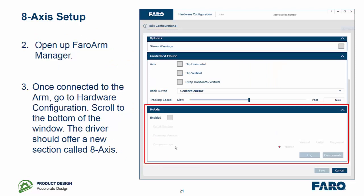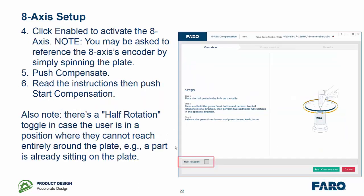You then open up the Faro Arm Manager. And once you've got both pieces of equipment connected, you scroll to the bottom and the driver should now have a new section called 8-axis. You click on the Enable button to activate the 8-axis and then now we need to tell where each axis of the arm is in relationship to the 8-axis.